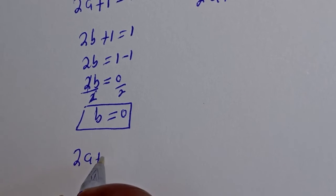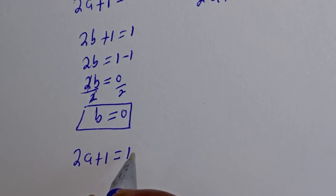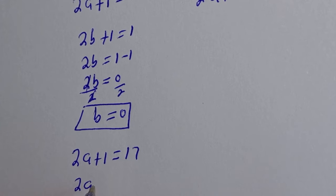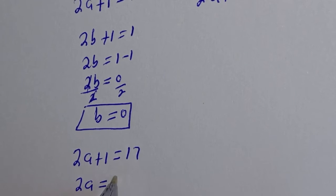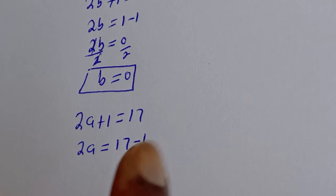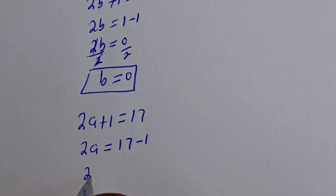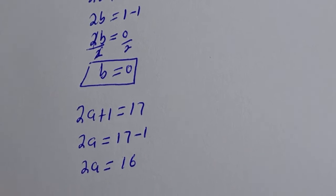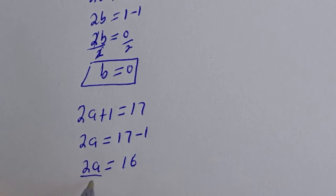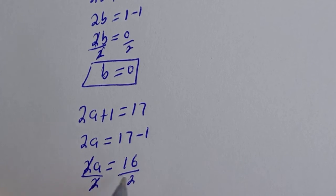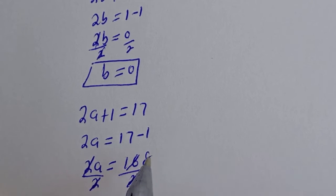Now let's consider 2a plus 1 is equal to 17. Then 2a is equal to 17 minus 1, so 2a is equal to 16. Dividing both sides by 2, this will cancel, and a is equal to 8.